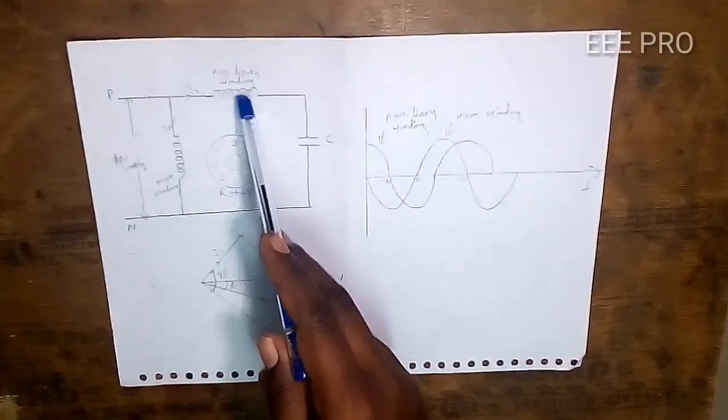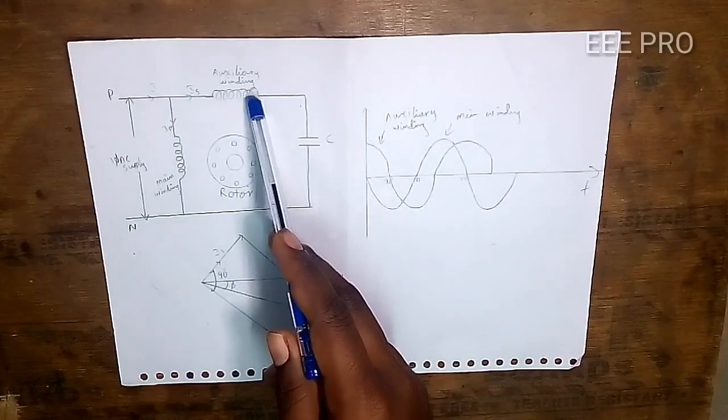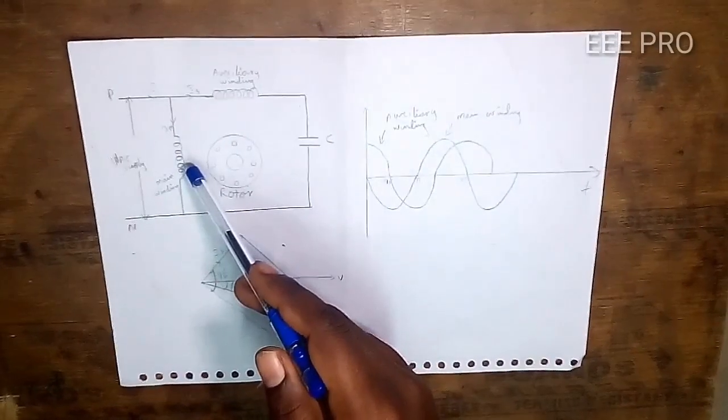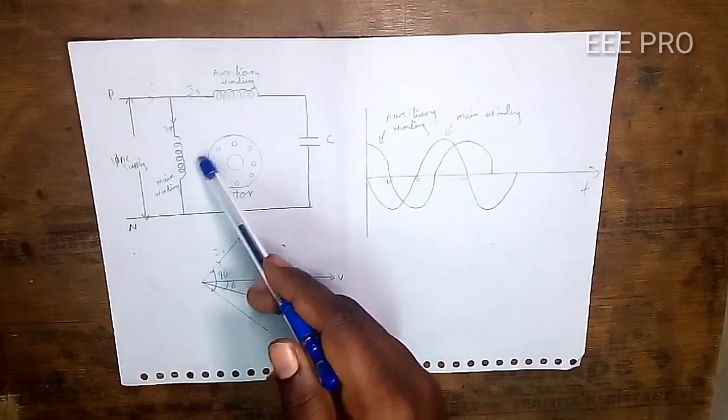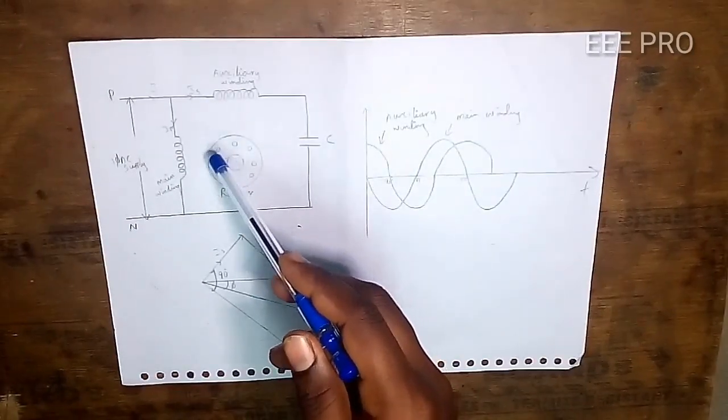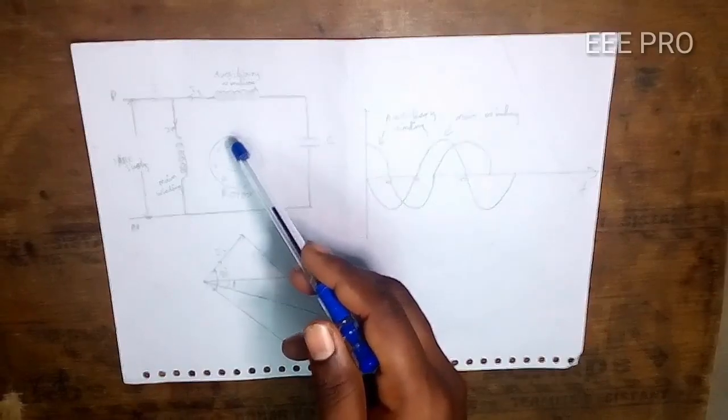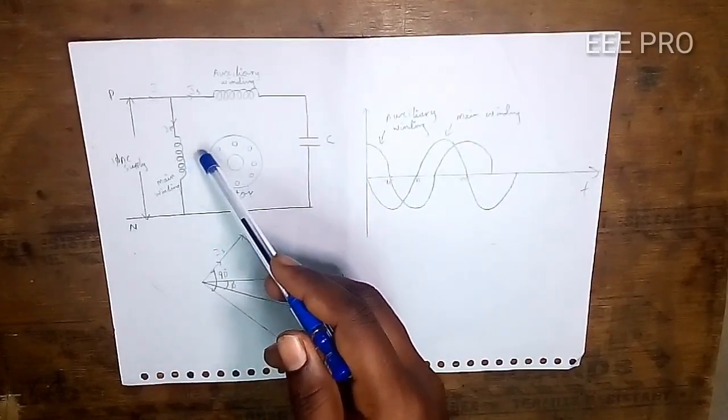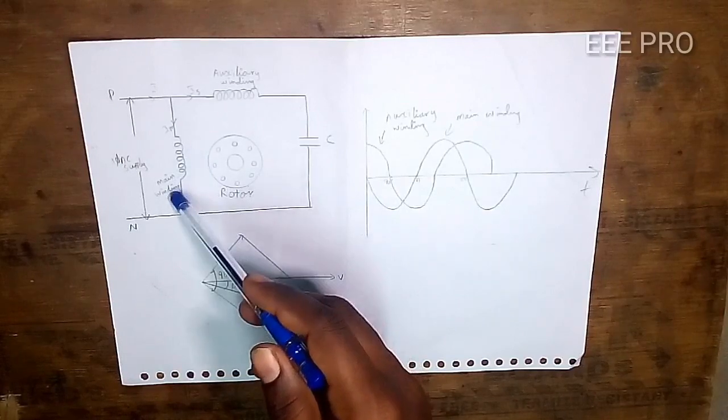This is a single phase induction motor. It's not self-starting, so we use the auxiliary winding to make it self-starting. This is the main winding.